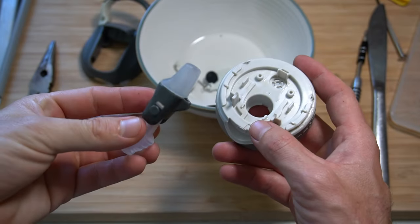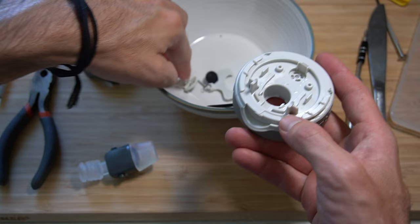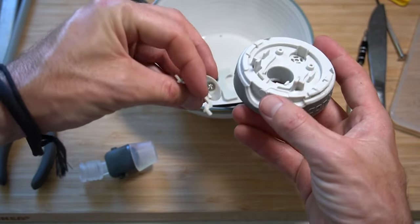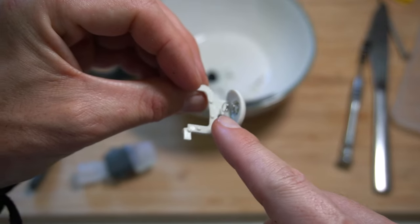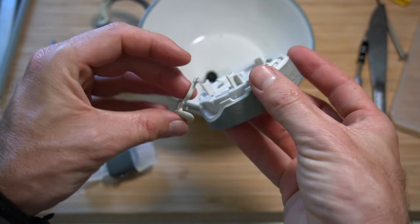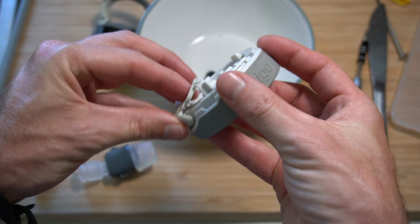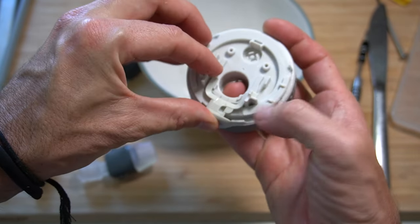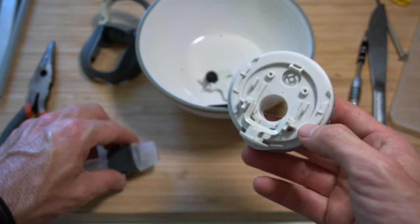Now, before we put this spout back on the lid, I actually find it easier to put this section on first, which is the button at the front. Make sure that you've got the spring on it already. Then go ahead and put the spring in first to compress the spring. And these arms need to get over the top of these two pieces here.